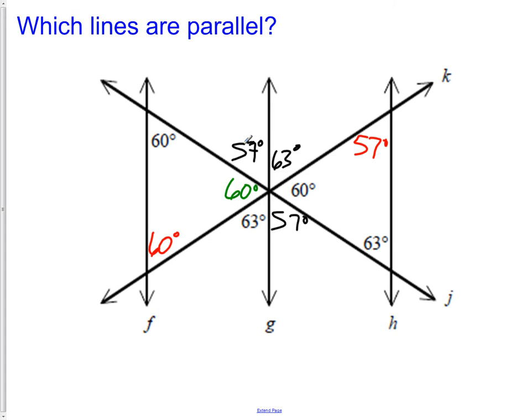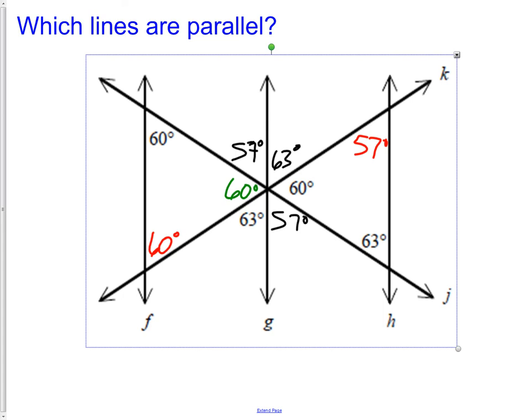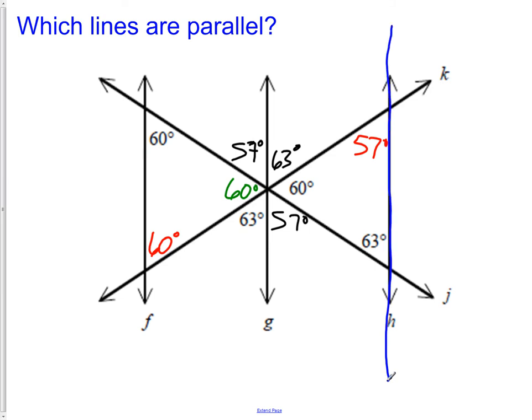Now we need to figure out what information we could use to figure out if we have parallel lines. As I look at this picture, I have a line here, I have line H, and I have line F. They are cut by a transversal. 57 and 60 would be called alternate interiors. They are not congruent, so we know that F and H are not parallel. We have eliminated those two as a possibility. Now let's see if we can find a different pairing to find parallel lines.